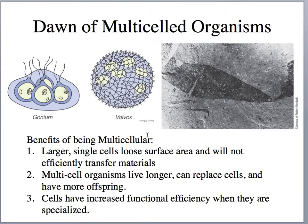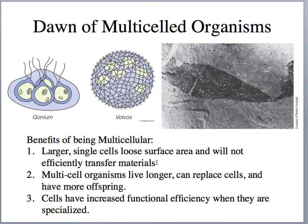Once these cells start grouping together, working together, relying on each other and becoming specialized, they become organisms. There are fossils called Gonium — as few as four cells living together — where each cell can live individually, but they chose to stay together maybe for protection or easier food gathering. But the first true multicellular organism is Volvox, which does have specialized cells. The benefits of being multicellular: a single cell that gets bigger loses surface area and can't efficiently transfer materials; multicellular organisms allow specialized functions, longer life, more offspring, increased functional efficiency, and better food acquisition through cooperation.